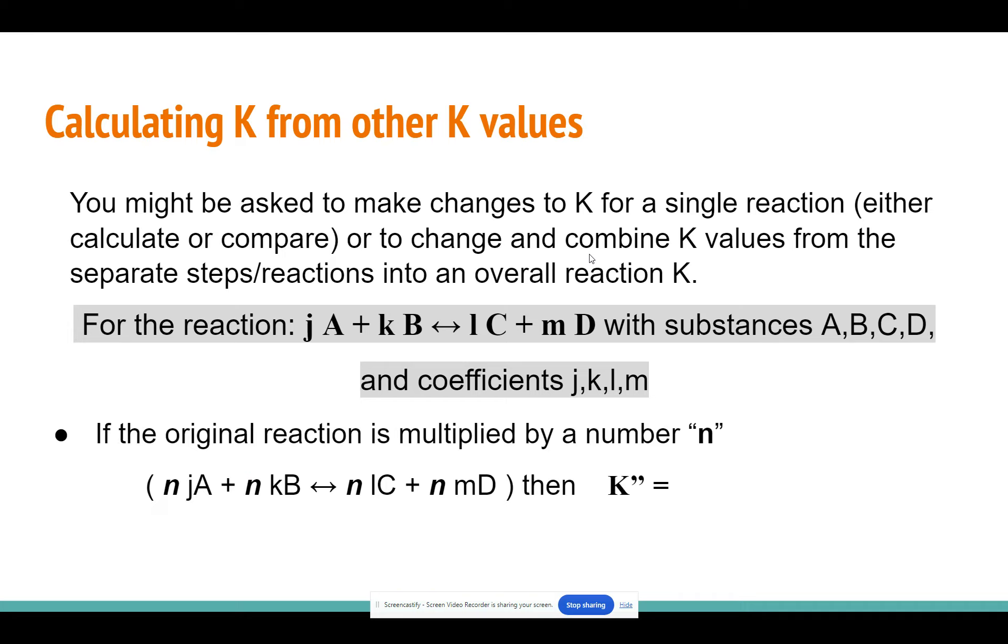Now, if we multiply a reaction by a number, let's say N, and I've shown you like putting that N in there. Remember, N is going to become a coefficient or be multiplied by any coefficients that are already there. And because our coefficients are what we raise our substances to a power of, then when we multiply by a new coefficient and add that N in there, our K value is going to be raised to the power of N.